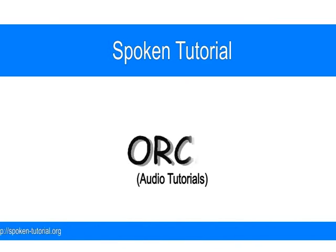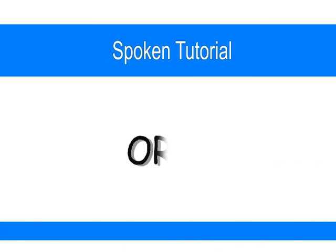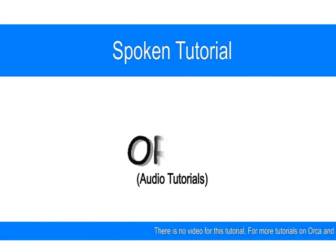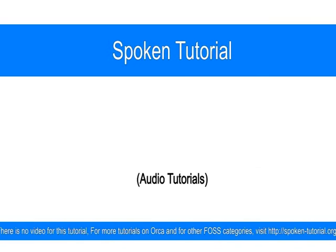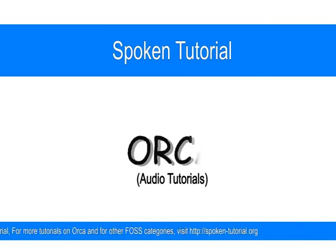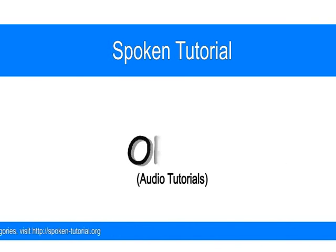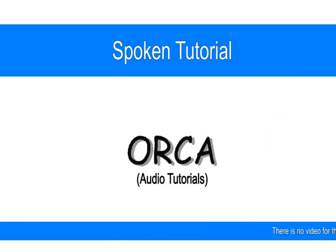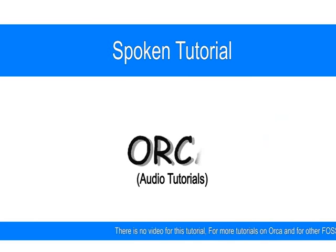I will type 'Learning Orca' as the notebook name. Orca echoes each letter as typed: L-E-A-R-N-I-N-G, Learning, O-R-C-A, Orca. Now press Shift plus Tab to locate the Create button and press Enter. Orca announces: Create button, Return, Search All Notes Frame, Note Column Header. That's it — we have created our first notebook. We are now on a list of notes. Press Shift plus Tab twice to move to the panel containing the list of notebooks.